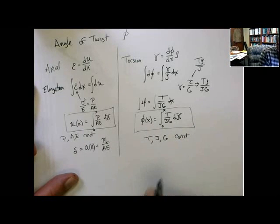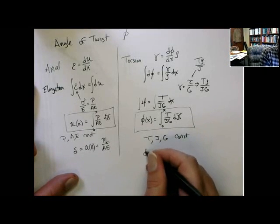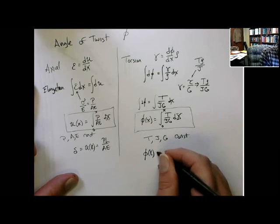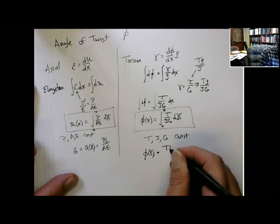In this case, they can all come out of the integral, and then we just left it with TL, that's the total angle of twist, TL over JG.